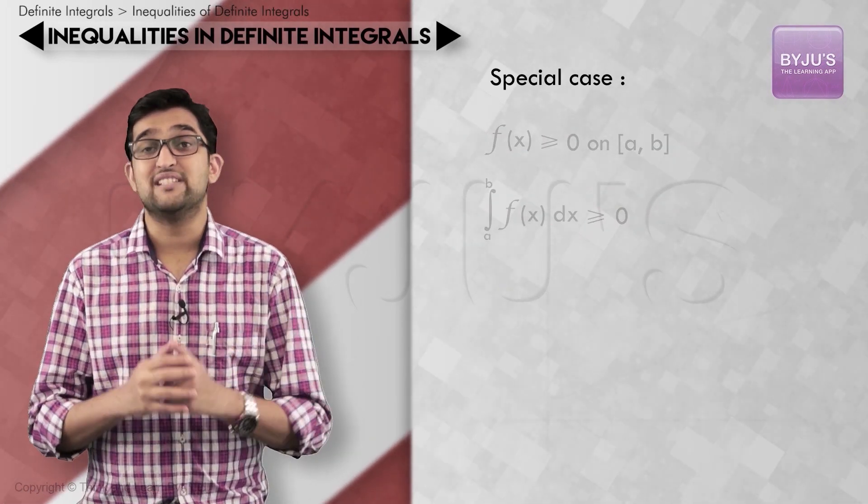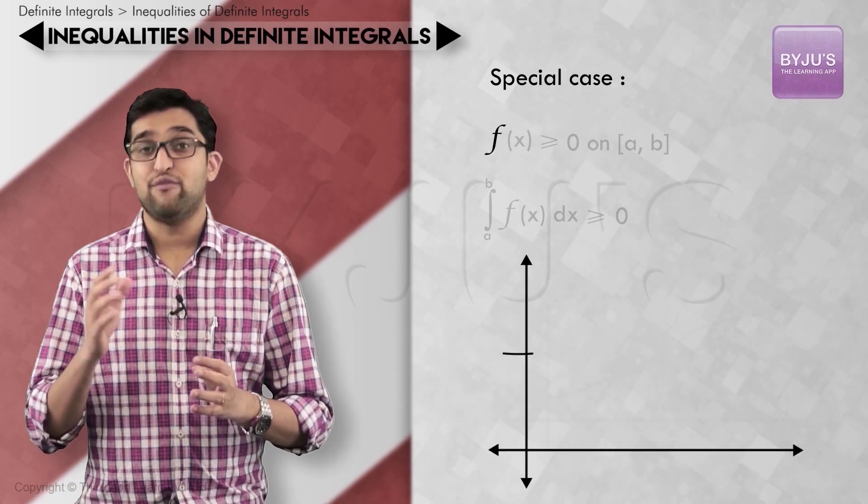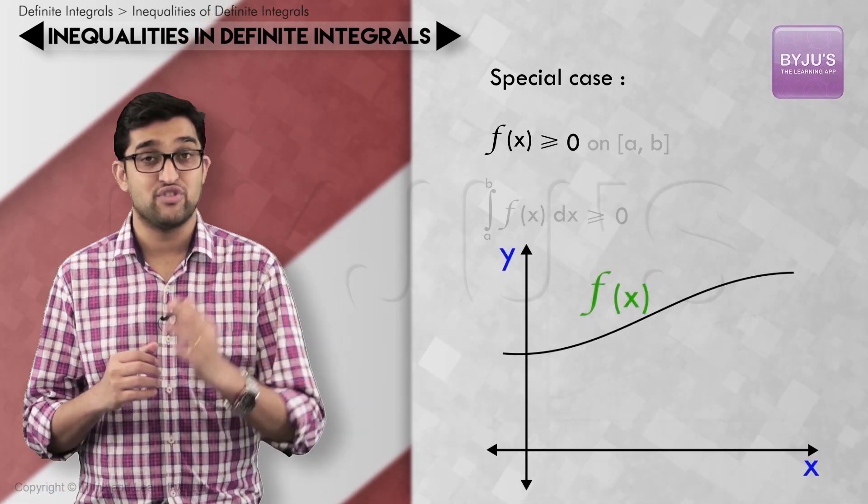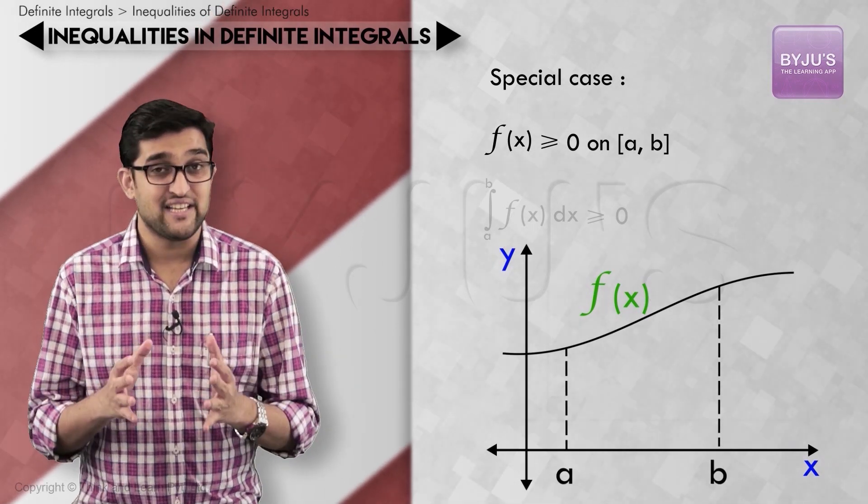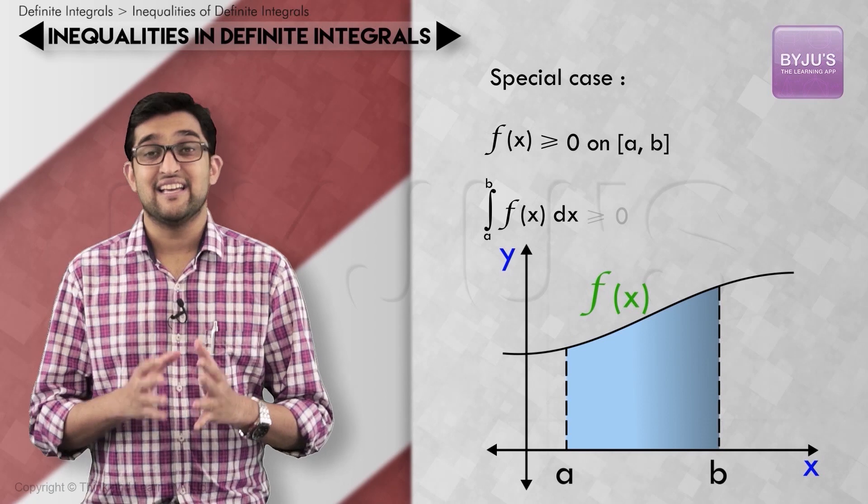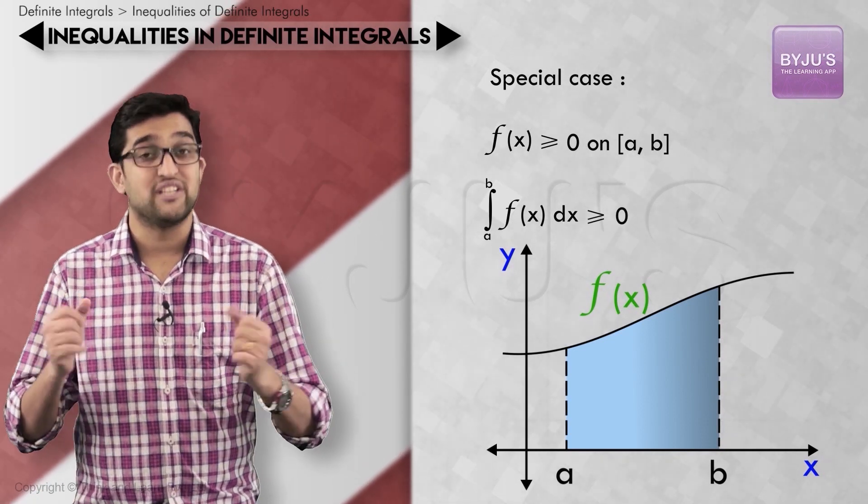One special case to consider in this result is when f(x) is greater than or equal to 0 on the closed interval [a, b]. In that case, we can safely say that integral a to b f(x) dx is greater than or equal to 0.